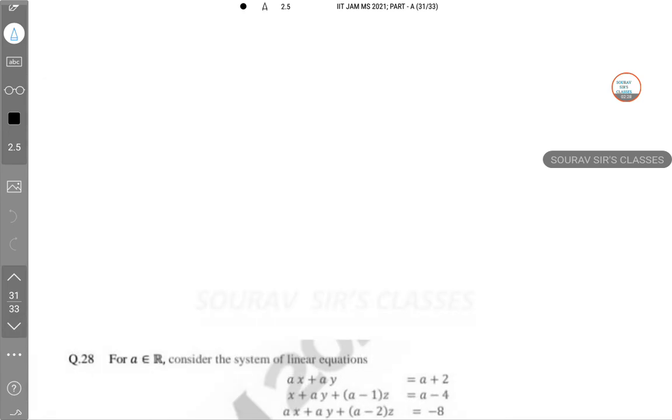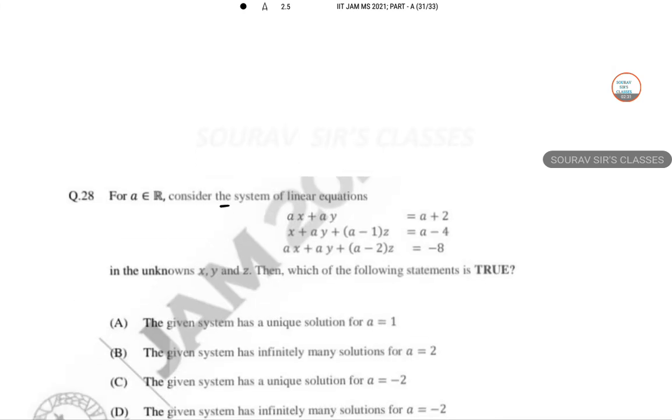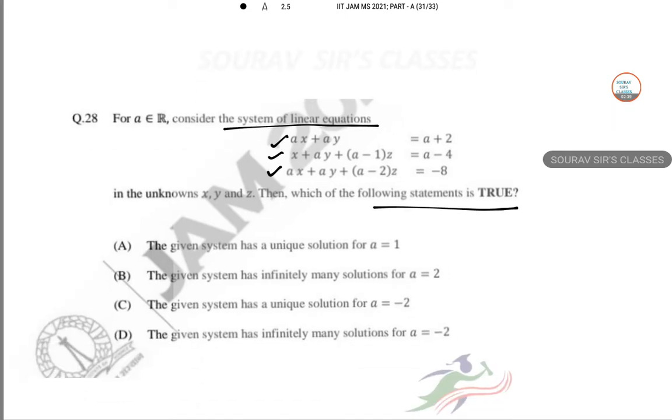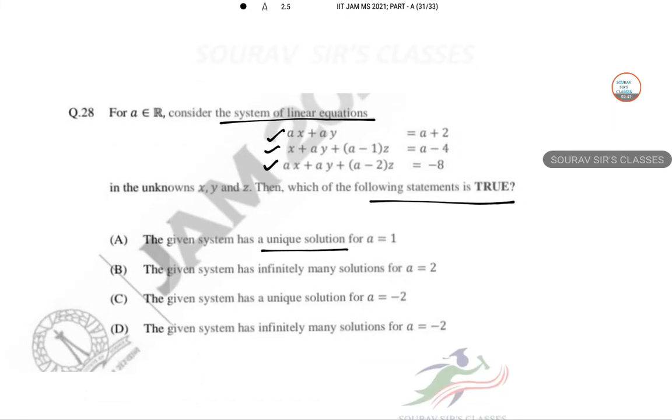Next is question number 28. Consider the system of linear equations being provided here with unknown x, y, z. Then which of the following statement is true? The given system has unique solution, infinitely many solutions?